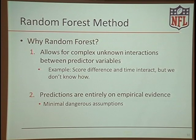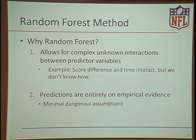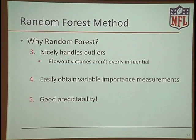Why did we choose the random forest? First, it allows for complex and unknown interactions between predictive variables. Score difference and time remaining definitely interact — leading by three a minute into the game is much different than leading by three with a minute left — and the random forest accounts for these interactions without us having to specify them. Second, predictions are based entirely on empirical evidence, leading to minimal dangerous assumptions. It also nicely handles outliers — blowout victories aren't overly influential. It's easy to obtain variable importance measurements. And possibly most important, it has very good predictability.